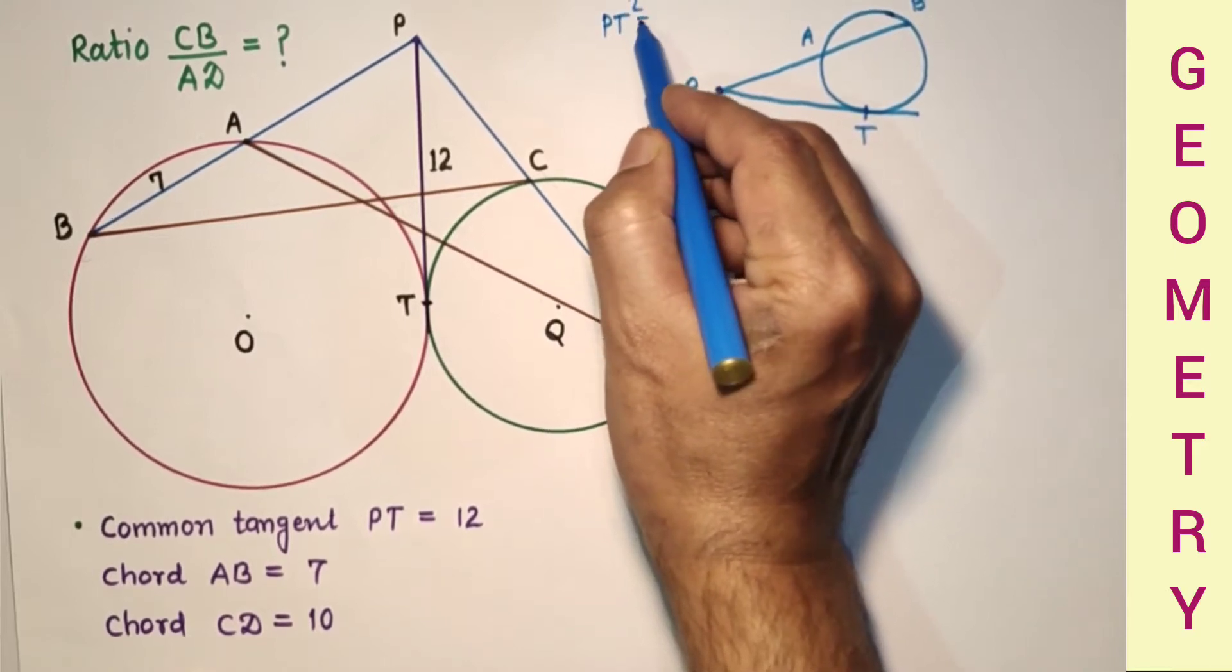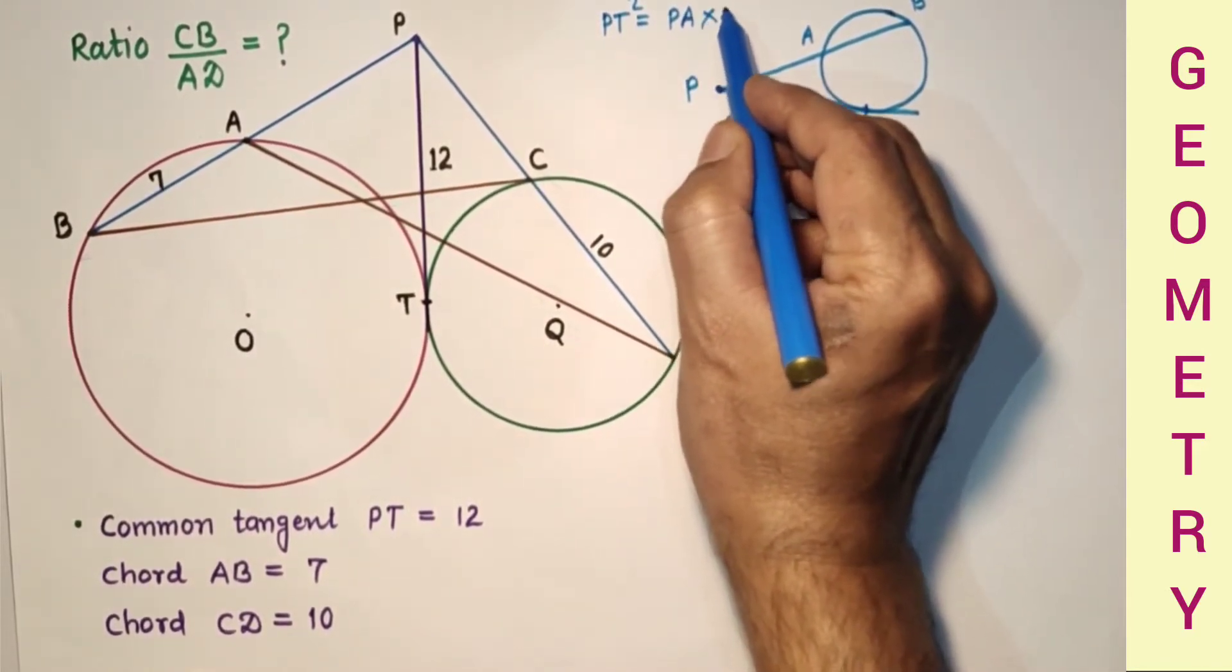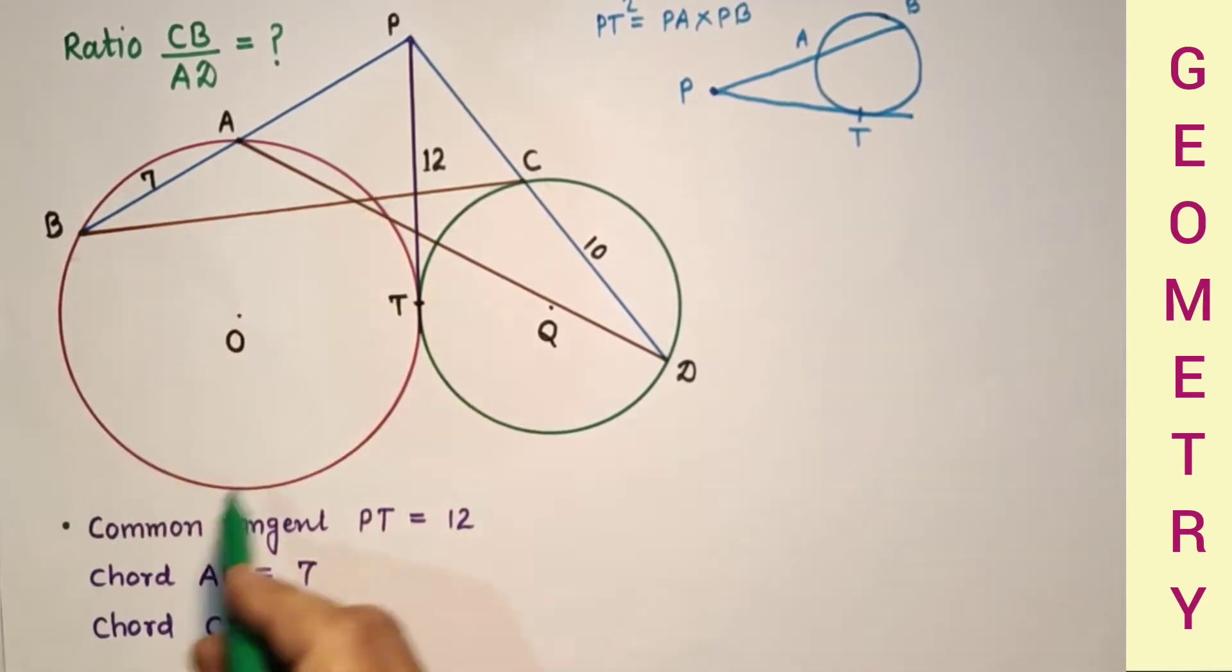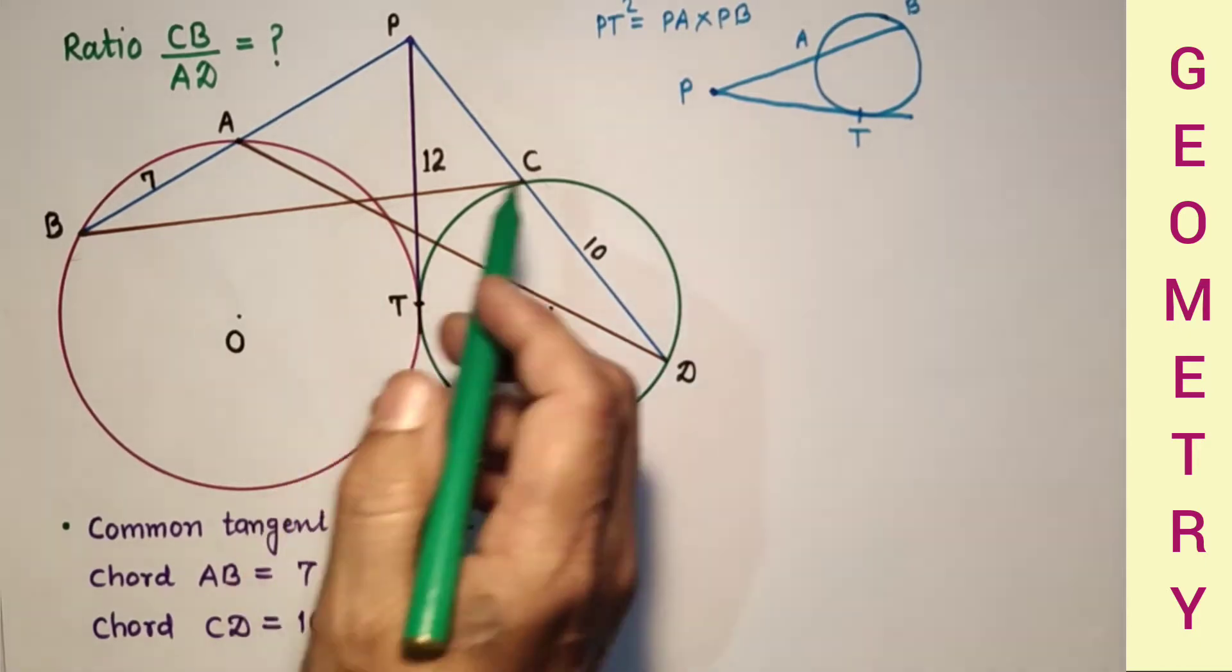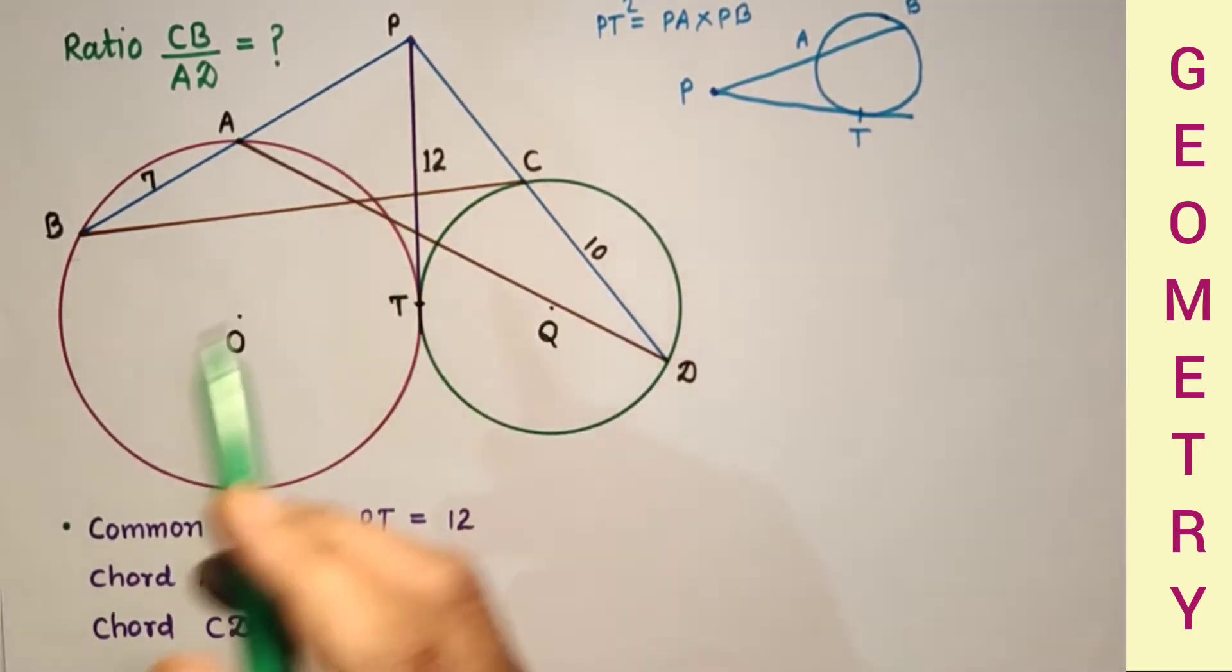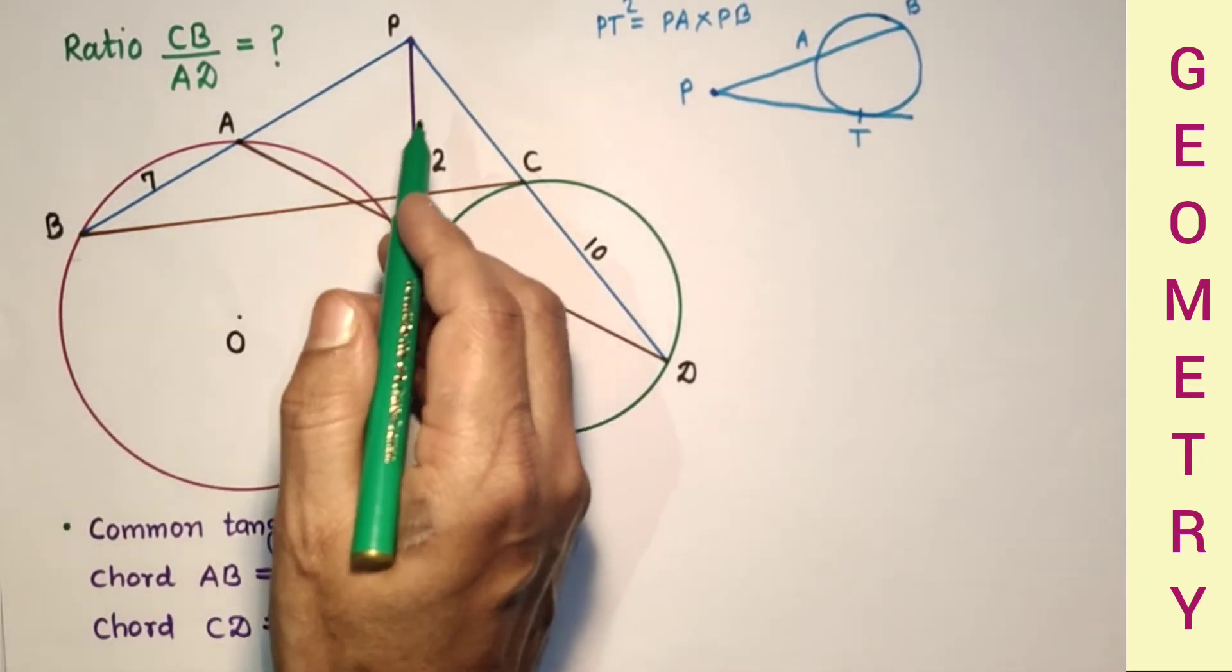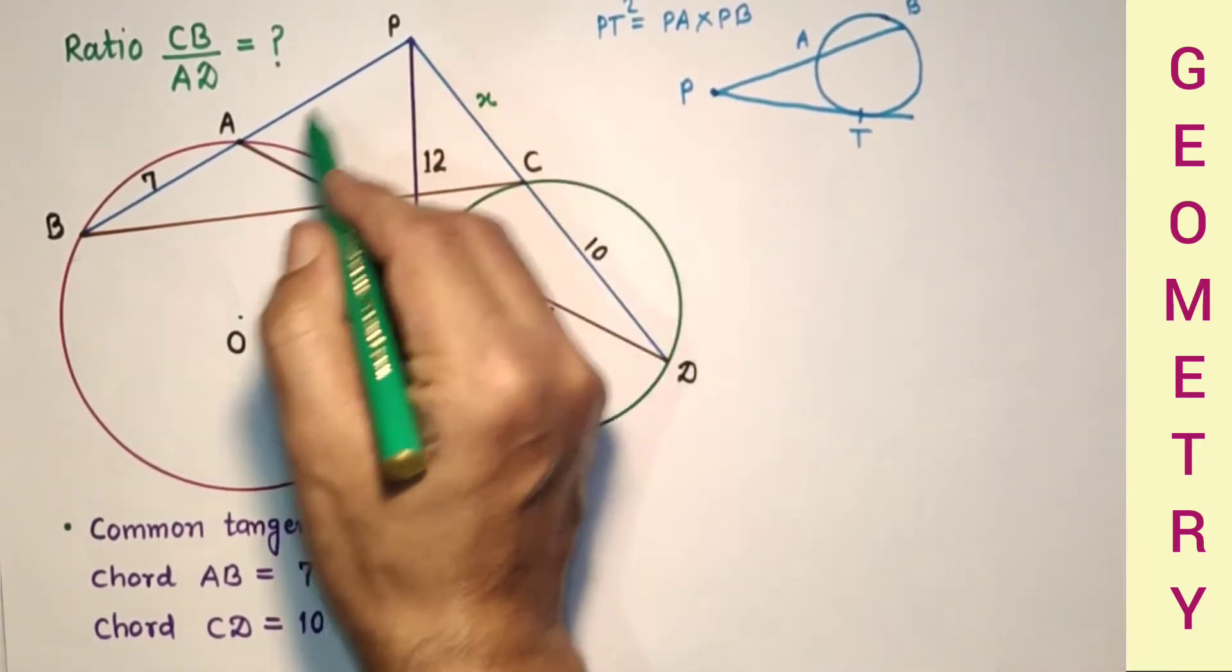PT square is equal to PA into PB using this theorem here. So this PT is tangent for this circle. This PT square is equal to PA into PB, and for this circle, this common tangent PT square is equal to PC into PD. But we don't have this whole length or this length and this length. So let us suppose this PC is X and this PA is Y.